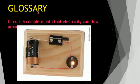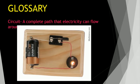Next, the glossary. Circuit — a complete path that electricity can flow around. See the picture. This is the circuit. In this picture you can see one cell, then wire, then bulb, then again wire, then switch. This switch is in the on position, so you can see light here. This is called a circuit. What is a circuit? A complete path that electricity can flow around.